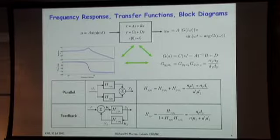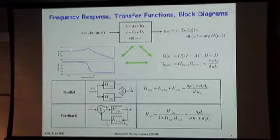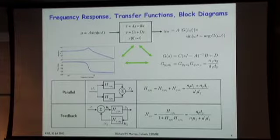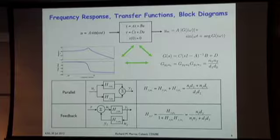If we pick a sinusoidal input and look at the output after transients die out, that output will also be a sinusoid for a linear system at the same frequency omega-t, but with a potentially different amplitude and phase. The amplitude and phase as a function of frequency is the frequency response—a frequency-dependent gain and phase. So we can talk about the frequency response, which shows the gain and phase change as a function of frequency, usually plotted in what's called a Bode plot, where we look at frequency on a log scale and magnitude on a log scale.